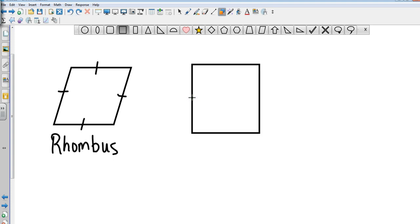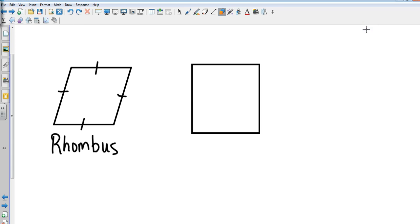All right, so our square is going to have similar features. All four sides are congruent.